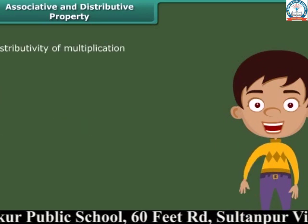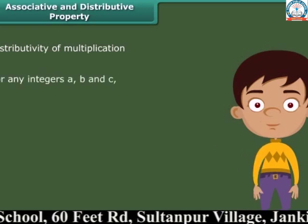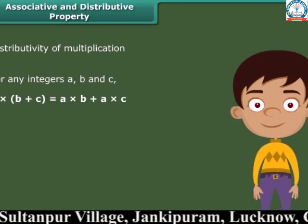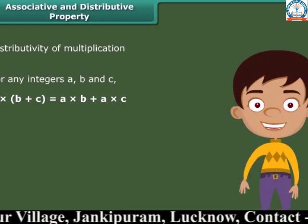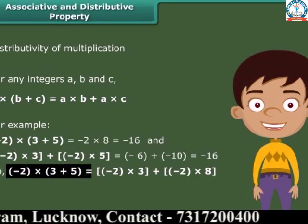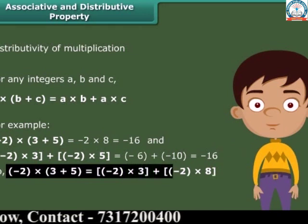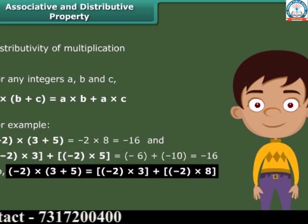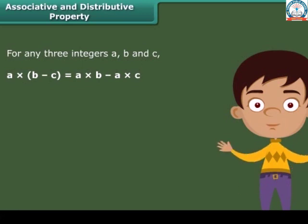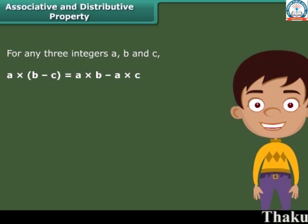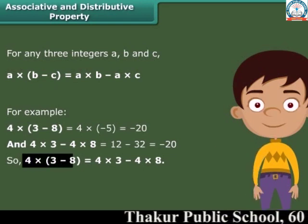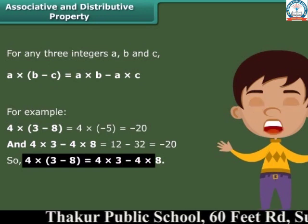Let us move towards the distributive property of multiplication. For any integers A, B and C, A times (B plus C) is equal to A times B plus A times C. For example, minus 2 times (3 plus 5) equals minus 2 times 3 plus minus 2 times 5. Similarly, for any three integers A, B and C, A times (B minus C) is equal to A times B minus A times C. For example, 4 times (3 minus 8) equals 4 times 3 minus 4 times 8.